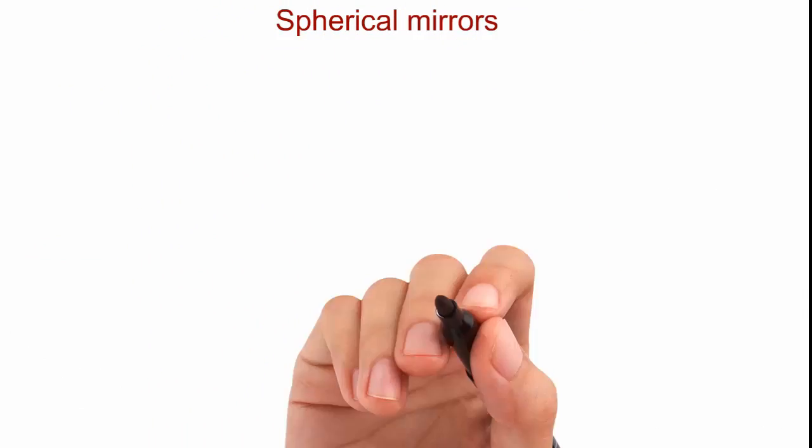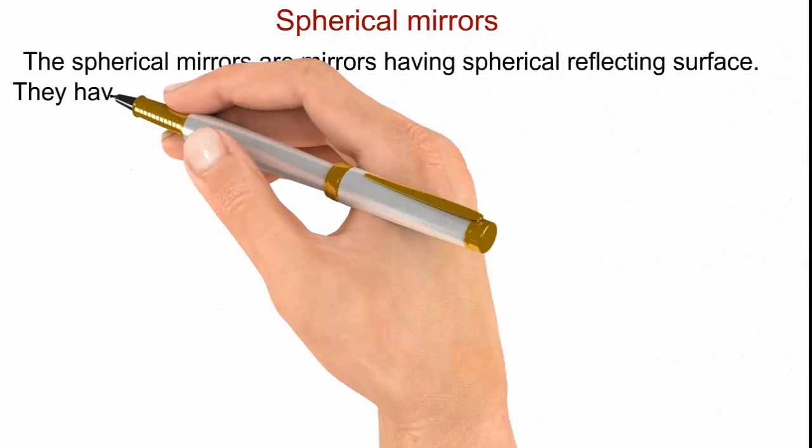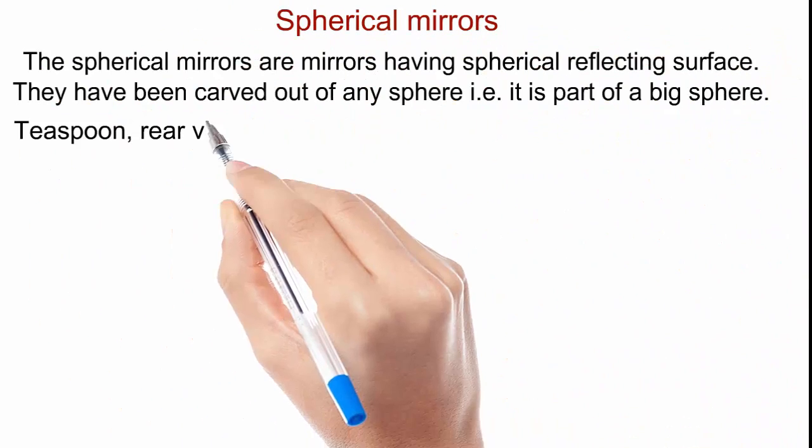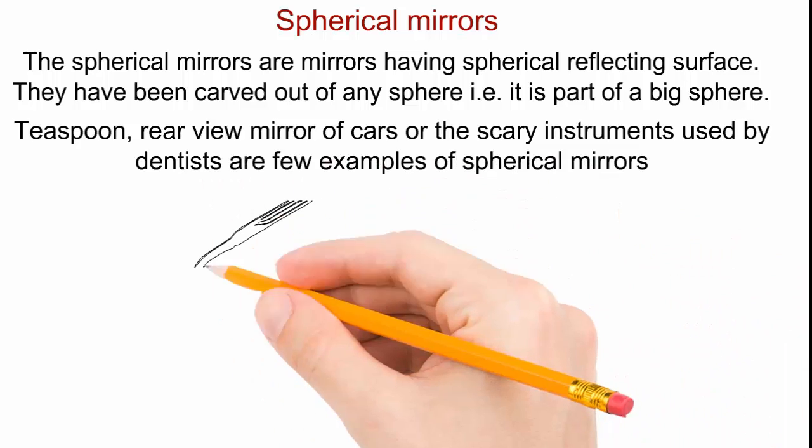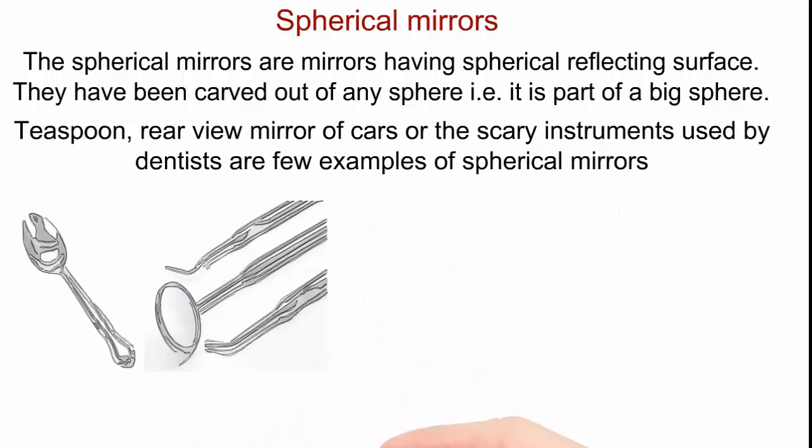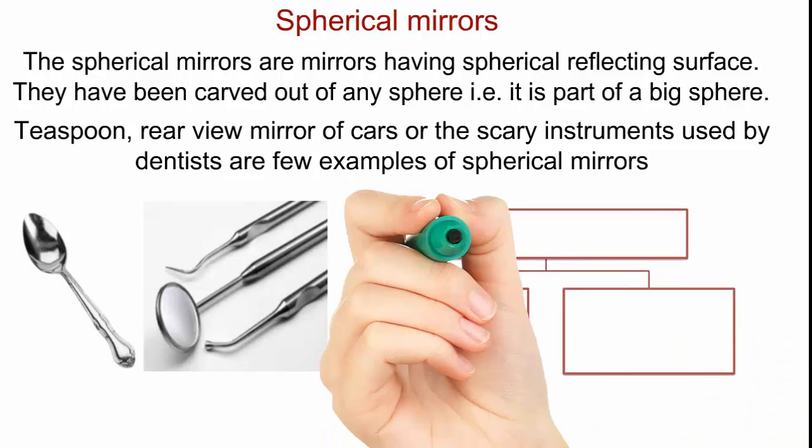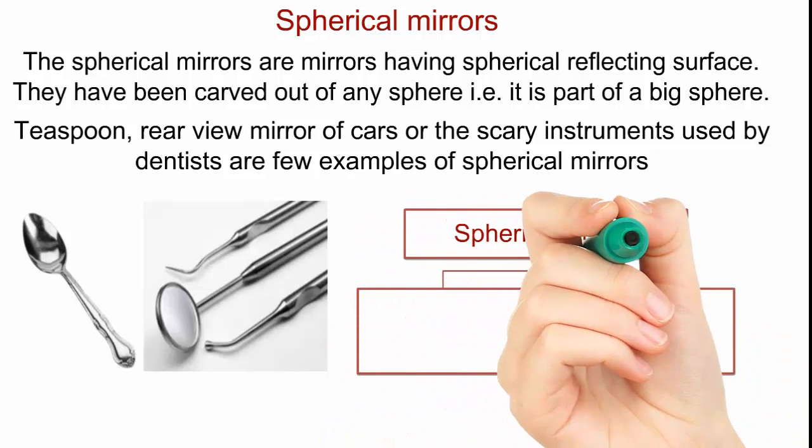Now, we are going to deal with spherical mirrors. The spherical mirrors are mirrors having a spherical reflecting surface. They have been carved out of any sphere. That is, it is part of a big sphere.